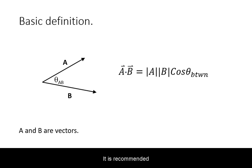It is recommended that you review the definition of a dot product before proceeding with this video. The dot product between two vectors is equal to the product of their magnitudes times the cosine of the angle between them.